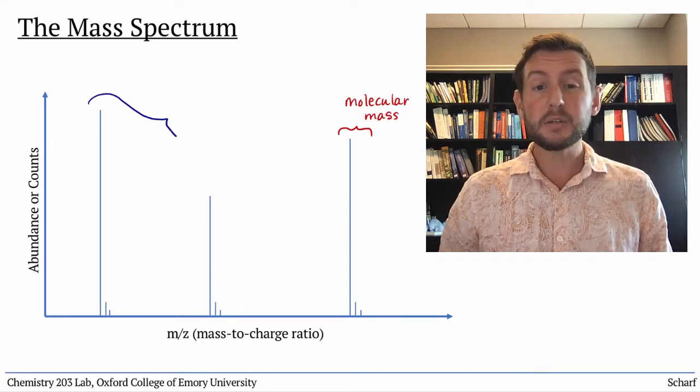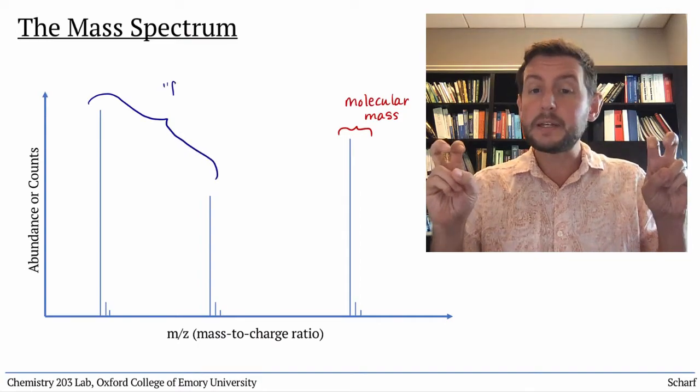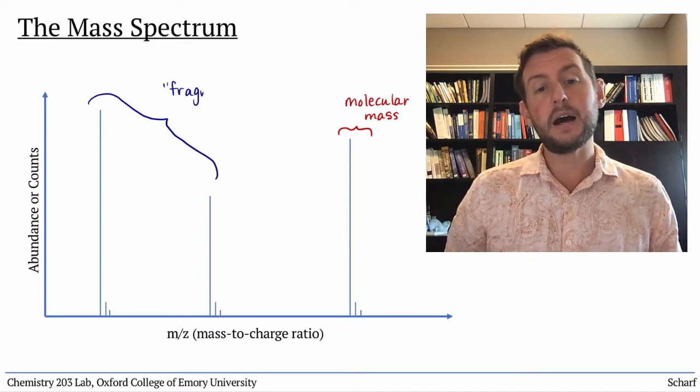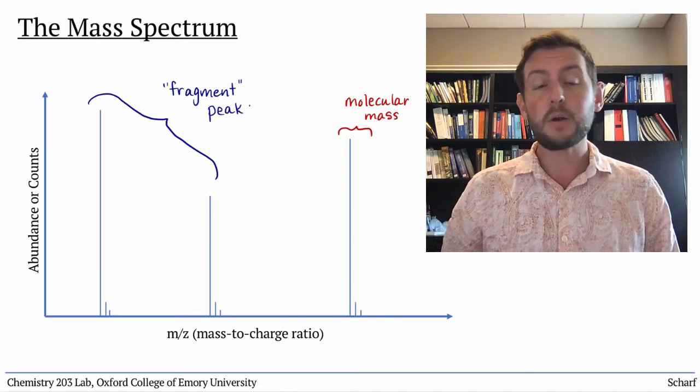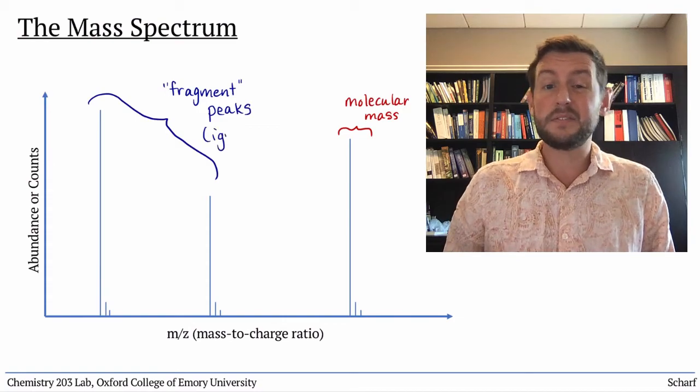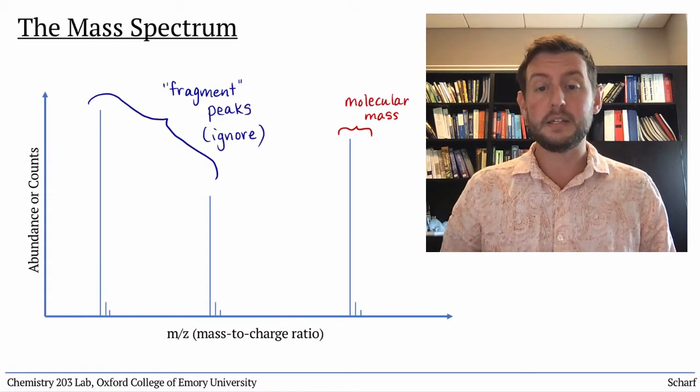The peaks with smaller masses are called fragment peaks, and they result from the ions breaking apart, or fragmenting, during the experiment. For our purposes, they're not very informative, so we're just going to ignore them in CHEM 203.